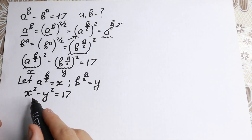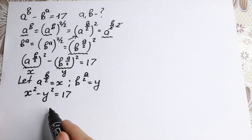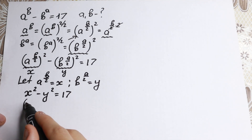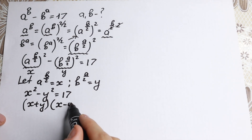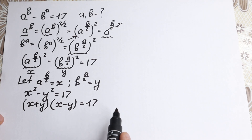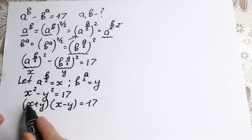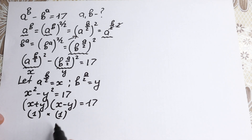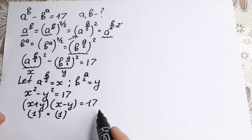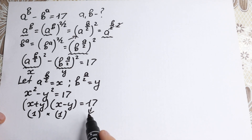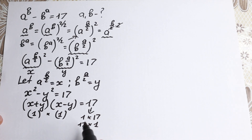A lot of students know this formula from school — it's the difference of squares identity: x squared minus y squared equals (x plus y) times (x minus y), so (x + y)(x − y) = 17. Now we need to think about 17. Since 17 is a prime number, the only integer factor combinations are 1 times 17 and 17 times 1. Note that x plus y is greater than x minus y, so we must have x plus y equal to 17 and x minus y equal to 1.